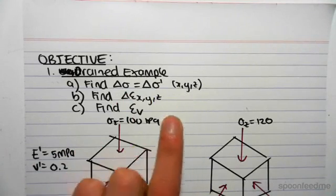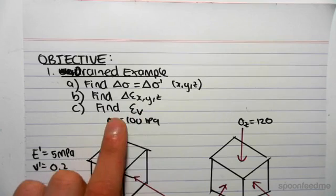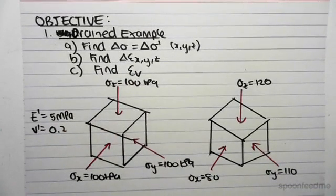We're going to find them in the x, y, and z directions. We're then going to find the strains in the x, y, and z directions, and then we can eventually find the volumetric strain. So I've got the same example we've done in the other videos.